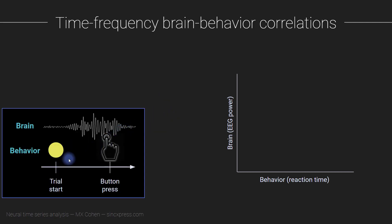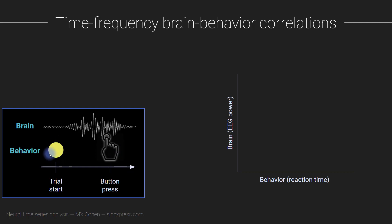Let's imagine you're doing some task-related experiment. You have the research participant engaging in some kind of behavior — maybe at the trial start there's a stimulus that appears on the screen and they have to make a decision about the stimulus and then press a button. Simultaneously, you are measuring brain activity. Now, people don't behave exactly the same way on every single trial. Sometimes they're going to be slower, sometimes faster. So let's say we want to try and correlate the variability in behavior over different trials with variability in the brain responses.